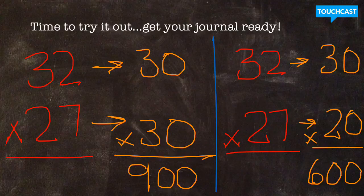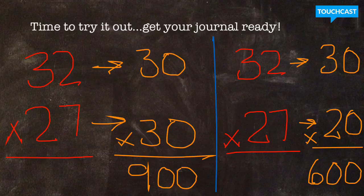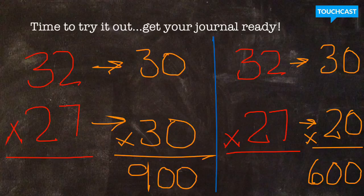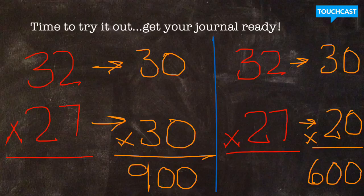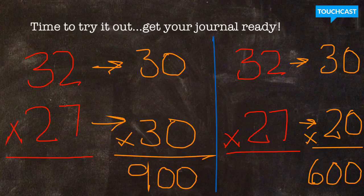So, hopefully you've had a minute to try this out in your journal. So, if you check it out here, I actually showed two different ways that people might have used compatible numbers. I originally looked at 32 and 27 and thought, if I round both of them, 32 rounds to 30, 27 rounds to 30, my compatible numbers are 3 and 3, or 30 and 30. That I can easily multiply in my head as 900.